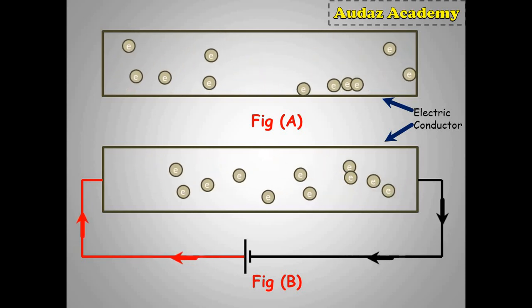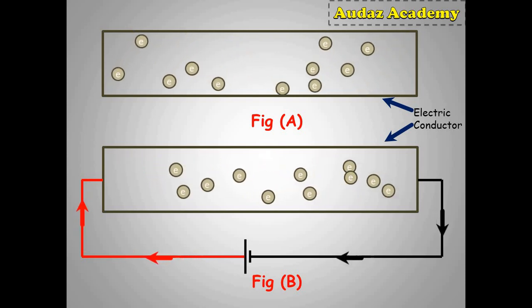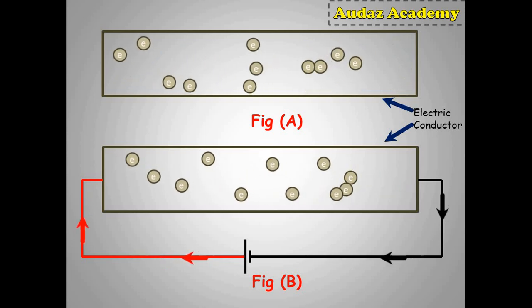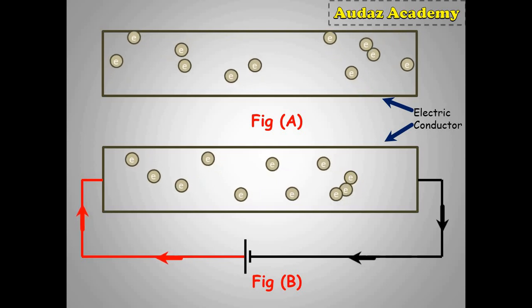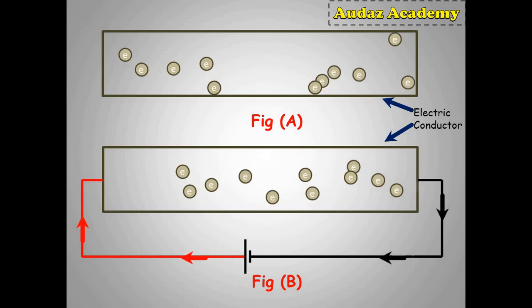Now this flow of electron is from negative terminal, that is from lower potential of the battery, to the highest potential of positive terminal of a battery. This motion is due to applied potential difference since the positive terminal is on the higher side and the negative terminal is on the lower side.